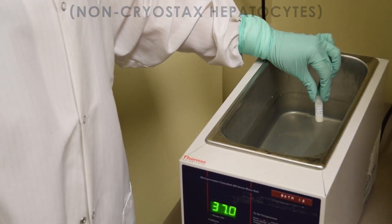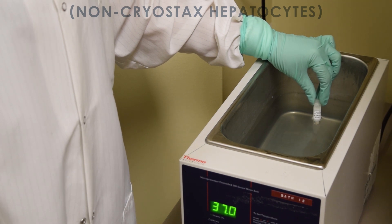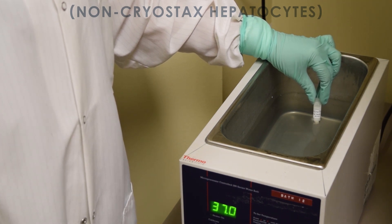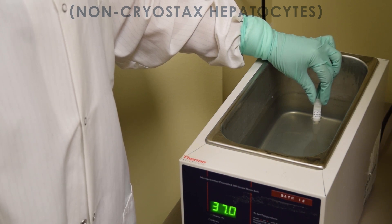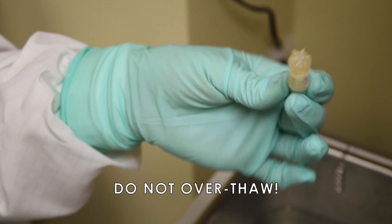Otherwise, quickly transfer the cryo tube into a 37-degree shaking water bath. The water level should be above the highest frozen point in the vial. Thaw the frozen cell pellet for about 80 seconds until it can move freely when the cryo tube is inverted.